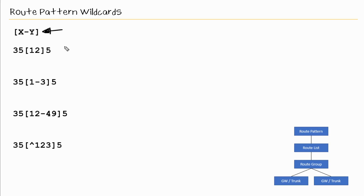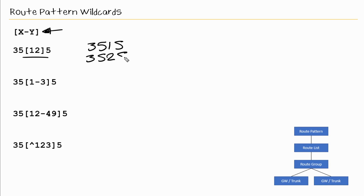Next we have brackets, which define a range. In our first example, the pattern 35[12]5 means the third digit must be 1 or 2 — so 3515 or 3525 would match. When you see a bracket, it's not the number 12 together; mentally place a comma between them and read it as '1 or 2.' So 3515 and 3525 are the two matches.